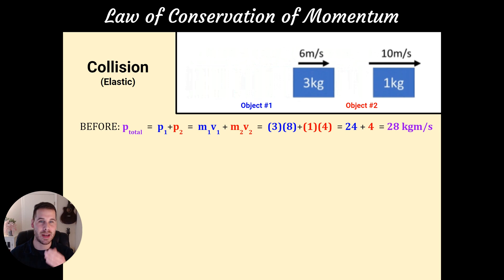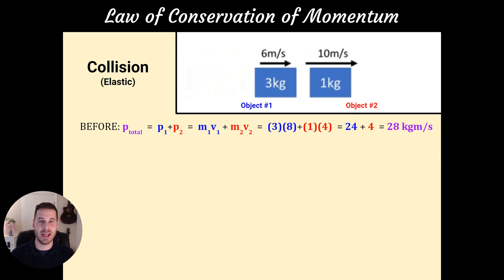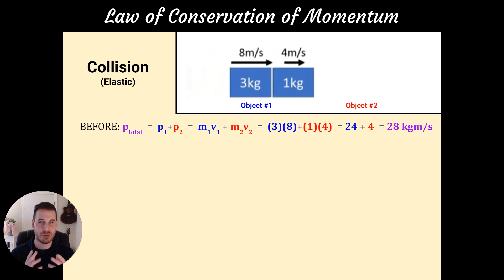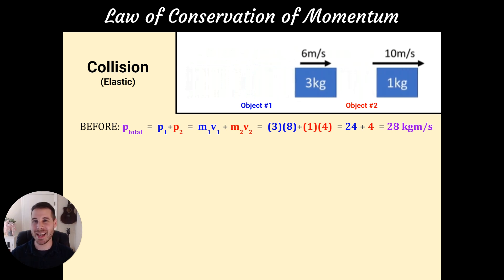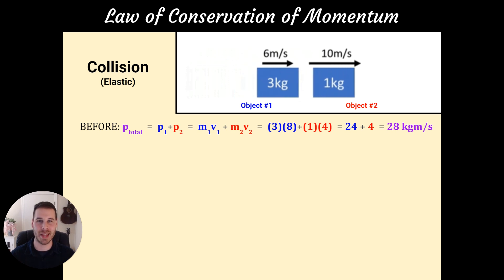So here's what the math would look like. The total momentum in that whole system of objects is equal to the momentum of object one plus the momentum of object two. Each of those momentums can be calculated with mass times velocity. If you plug the numbers in, you get three kilograms times eight meters per second for the first block, and then one kilogram times four meters per second for the second block. You crunch those numbers and you get 24 plus four, or a total of 28 kilogram meters per second in the whole system before they collide.